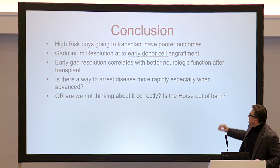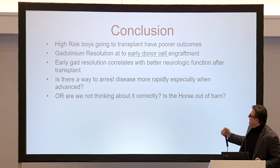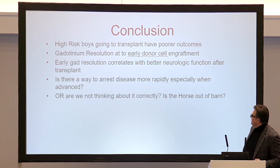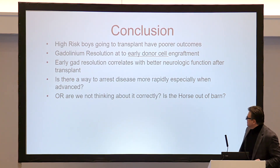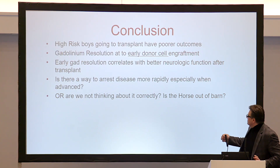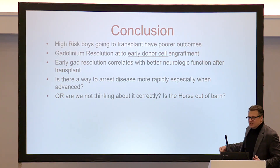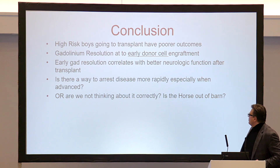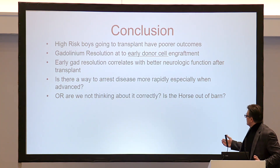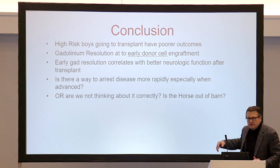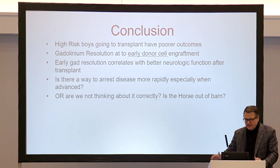The conclusion is that high-risk boys going to transplant have poor outcomes. Gadolinium resolution is really due to early stem cell engraftment, and early gadolinium resolution correlates with better outcomes. Is there a way to arrest disease more rapidly, especially when the boys are advanced? Are we thinking about this incorrectly? Is the horse already out of the barn for the advanced boys?